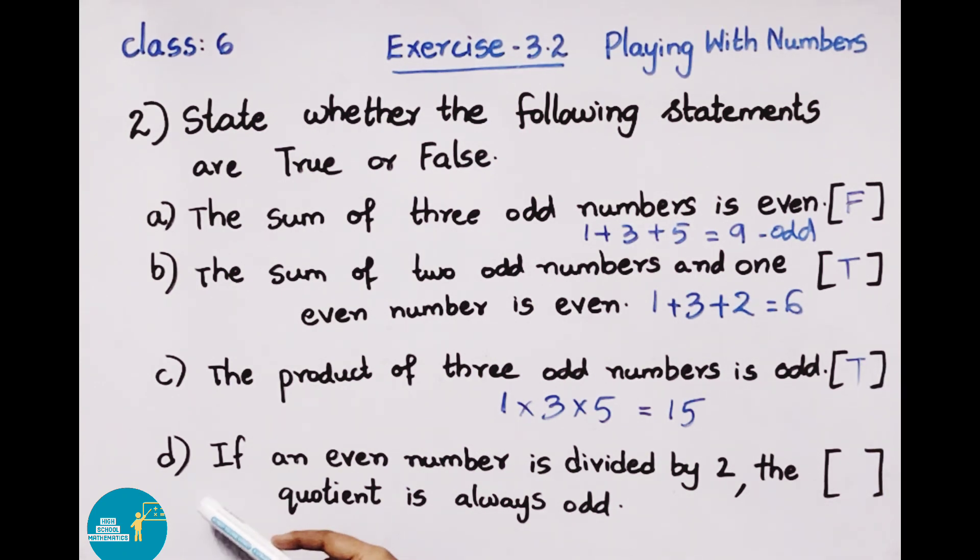Statement d: If an even number is divided by 2, the quotient is always odd. Take even number 12. If 12 is divided by 2, using the 2 times table, 6 times 2 is 12. So 12 minus 12, remainder is 0, and quotient is 6. 6 is an even number. The statement is false.